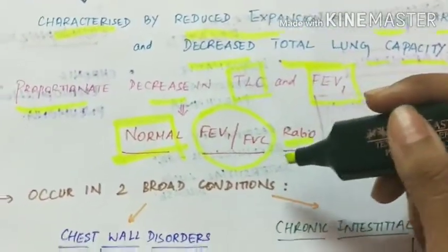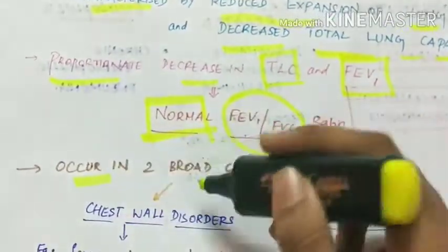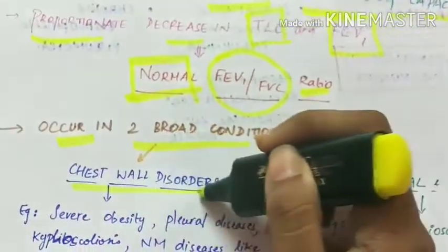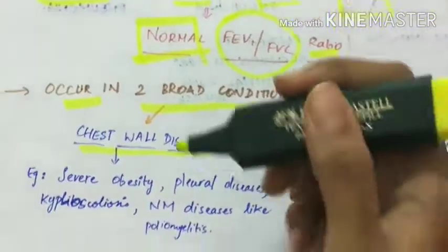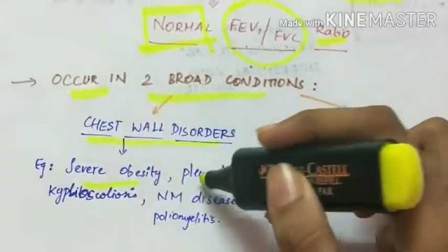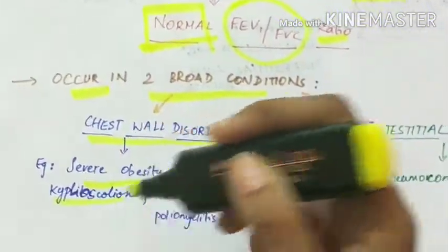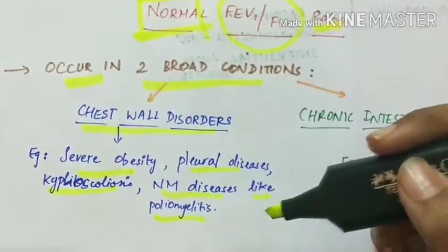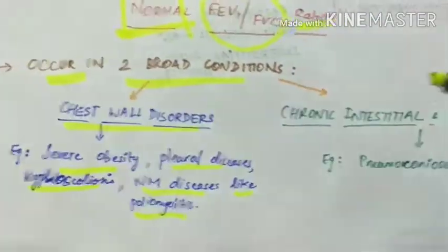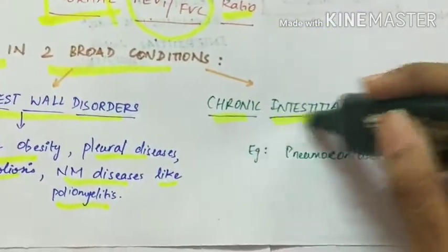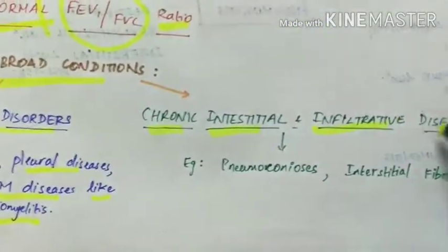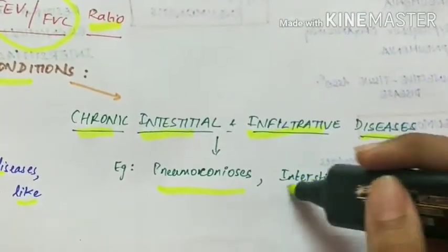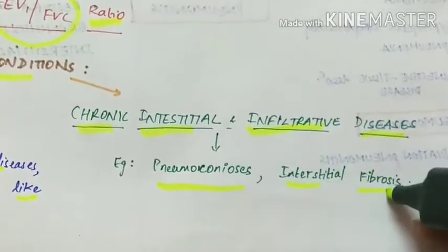Restrictive lung diseases occur in two broad conditions. First, chest wall disorders like severe obesity, pleural diseases, kyphoscoliosis, and neuromuscular diseases like poliomyelitis. Second are chronic interstitial and infiltrative diseases, for example pneumoconiosis and interstitial fibrosis.